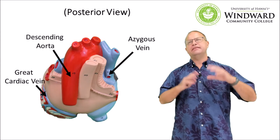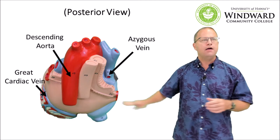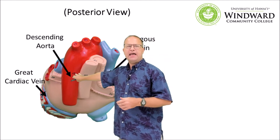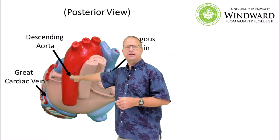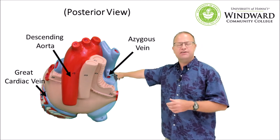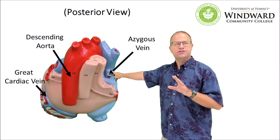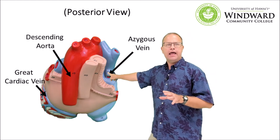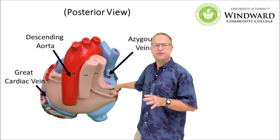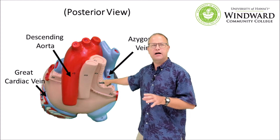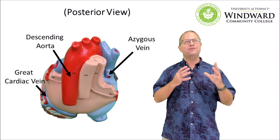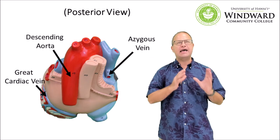Let's take a look at the posterior side of the heart. Remember this area is called the base, where all the blood vessels connect. We have the descending aorta visible there, the vena cava, and coming off the backside of the vena cava is the azygous vein, which goes to the spine. We can also see the trachea, which branches off into the right and left bronchi, and the esophagus. There's a lot of tubing very close to the heart in this region we call the mediastinum.